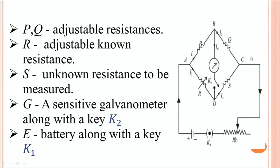When you connect these resistors in this arrangement, the potential at point B and the potential at point D will depend on the voltage drops across these resistors. The potential at point B can have 3 possibilities: it can be greater than at D, less than at D, or the same as at D. When you close the keys, current flows and these are the 3 possibilities.